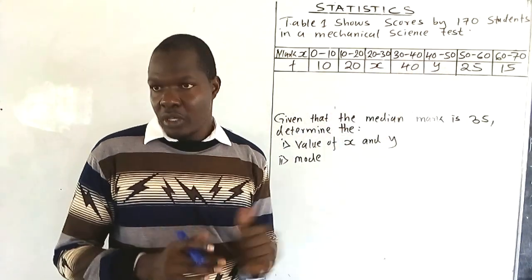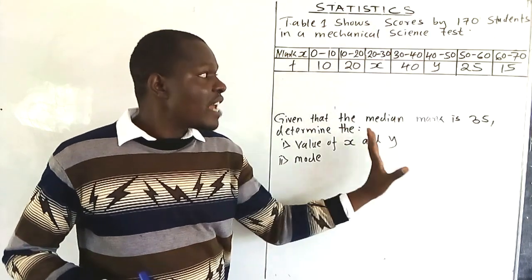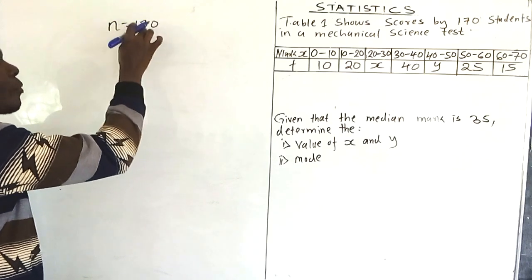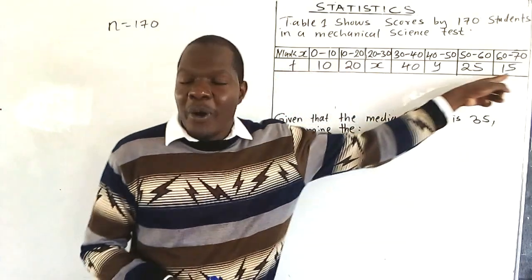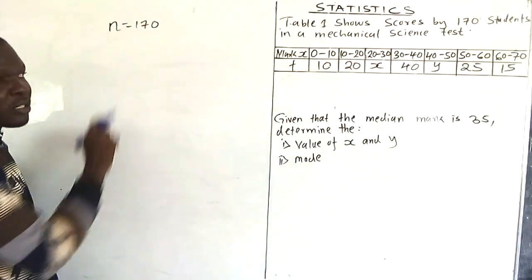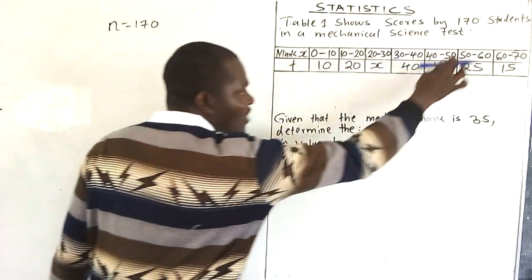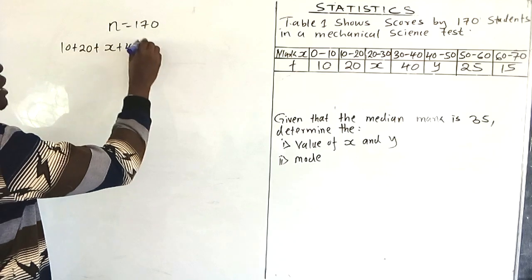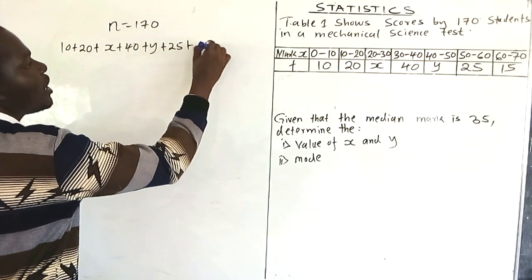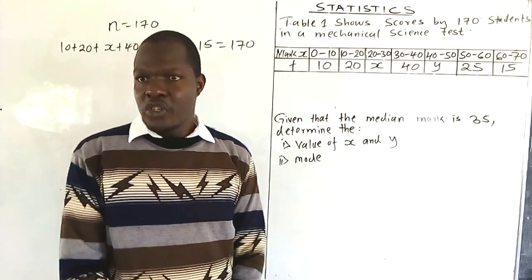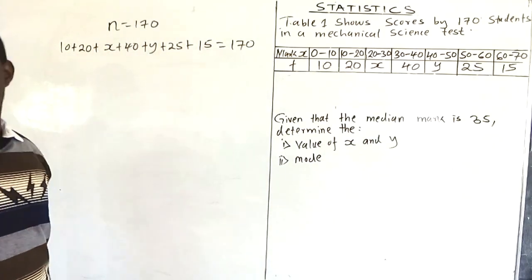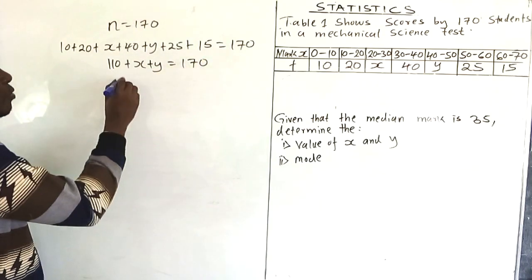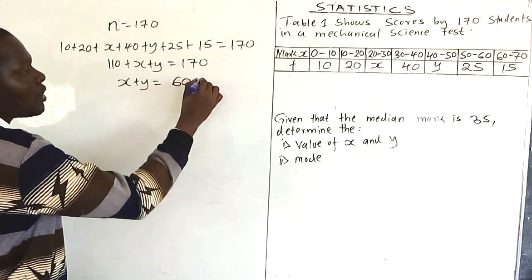What is happening here is that you have unknowns in the table. To get unknowns, you use what is given to get what is required. The scores are by 170 students, meaning n = 170. Since n is found by adding up all the frequencies, 10 + 20 + x + 40 + y + 25 + 15 should give you 170. So 110 + x + y = 170, which means x + y = 60. That is Equation 1.